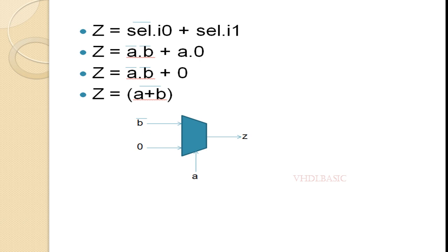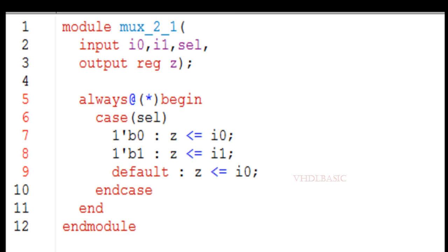This is how we implement the NOR gate using a 2-to-1 MUX. Now let's implement this in Verilog and explain the simulation result as well. This is the 2-to-1 MUX Verilog code where I0, I1, and select are the inputs and Z is the output. In the case statement: whenever select is 0, I0 is assigned to Z; whenever select is 1, I1 is assigned to Z.